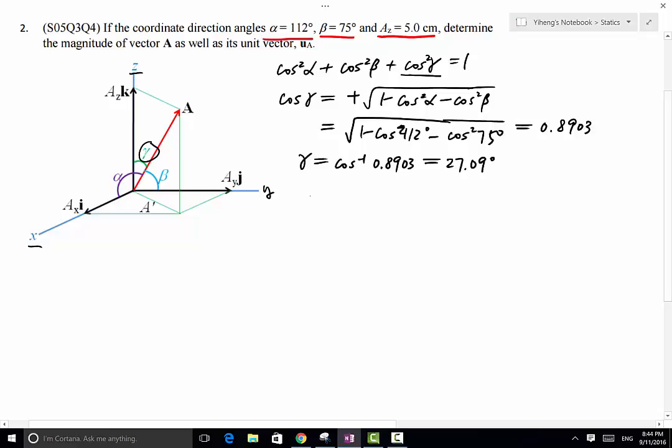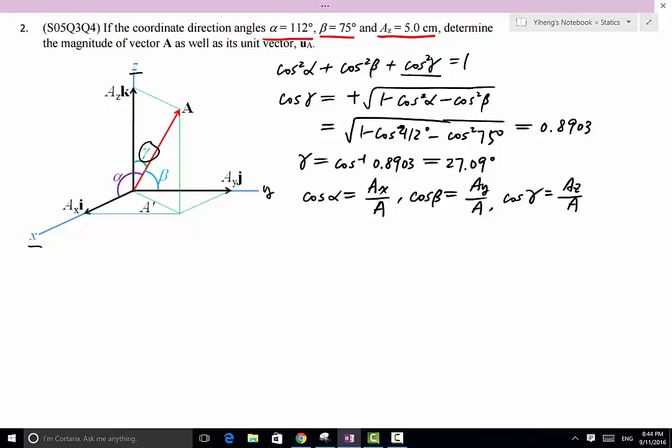And because we know that cosine alpha equals to Aₓ over A, the x component of the vector over the magnitude of the vector, similarly cosine beta equals to Aᵧ over A, and cosine gamma equals to Aᵧ over A. So this last one is what is useful for us, because now we know cosine gamma equals to 0.8903.